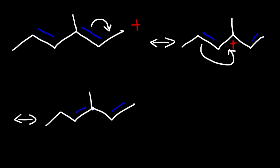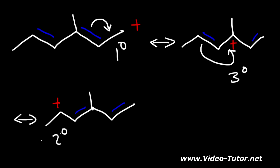We can draw another one: the positive charge is going to jump two carbons to the left, so it's now on that carbon. In our first example we have a primary allylic carbocation, in the second it's tertiary, and in the third it's secondary. Therefore, the tertiary allylic carbocation is the major resonance contributor, because a tertiary allylic carbocation is more stable than a primary or secondary one.